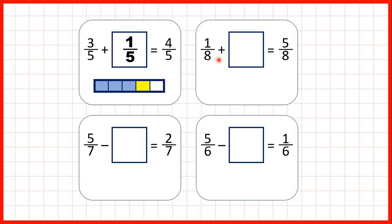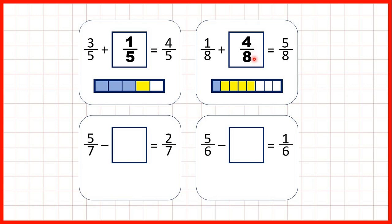Now, 1/8 plus what equals 5/8? We can show 1/8 in blue, and then if we colour in yellow so that 5/8 of our fraction bar is coloured in altogether, we can see that we have 4 yellow pieces — so that's 4/8. And again, notice that 5/8 take away 1/8 is equal to 4/8. We can use subtraction to find our missing number even if the missing number is a fraction.